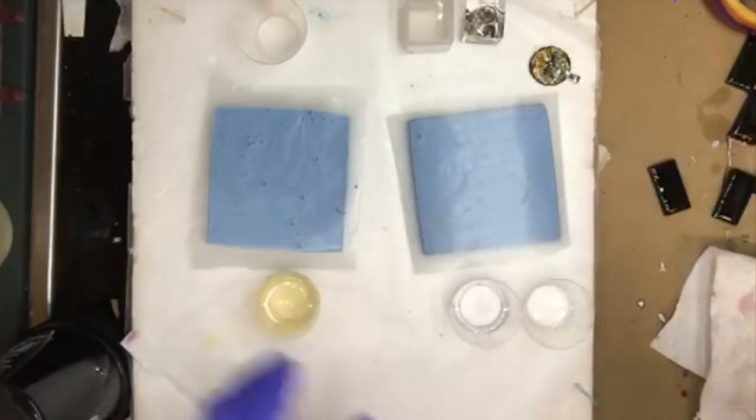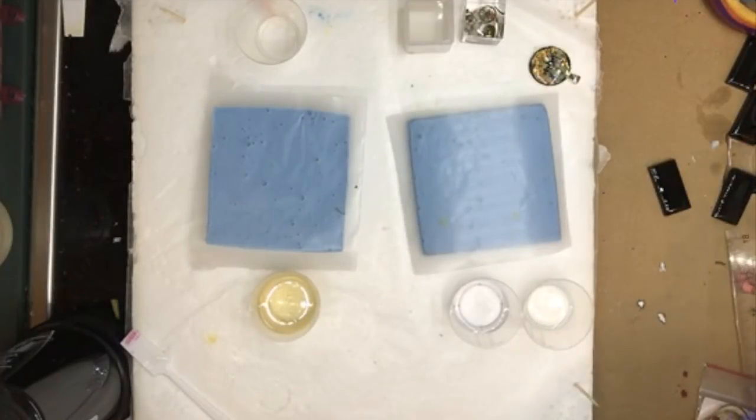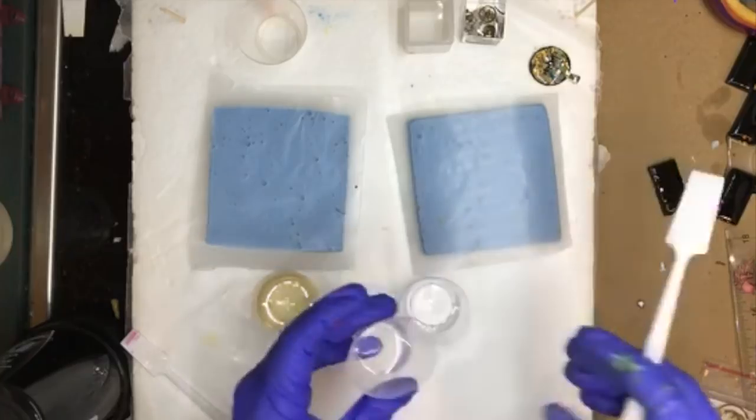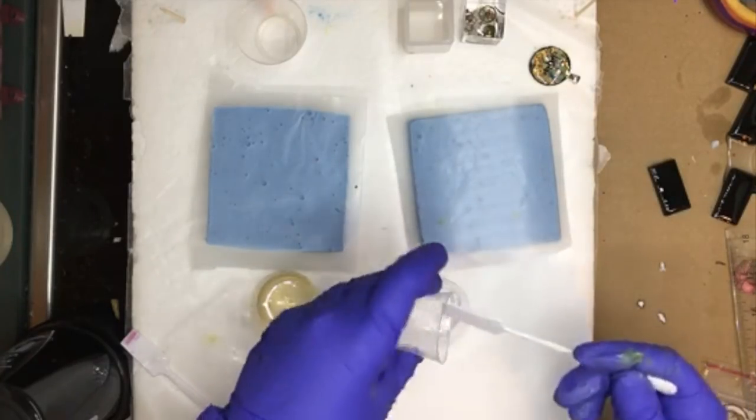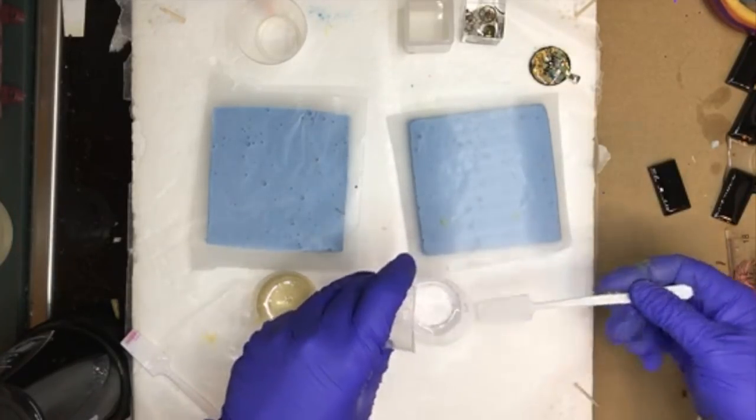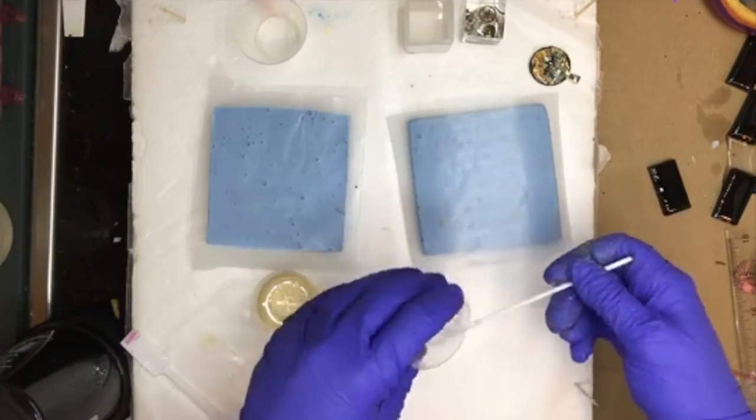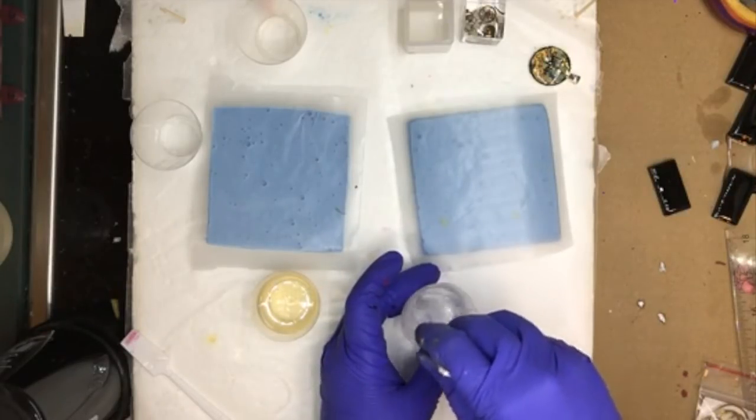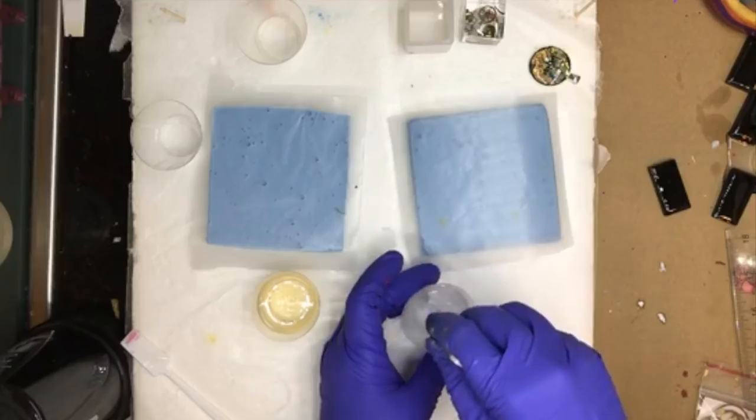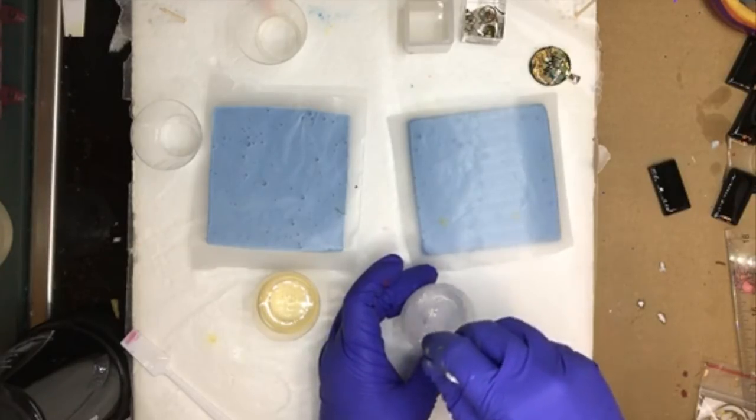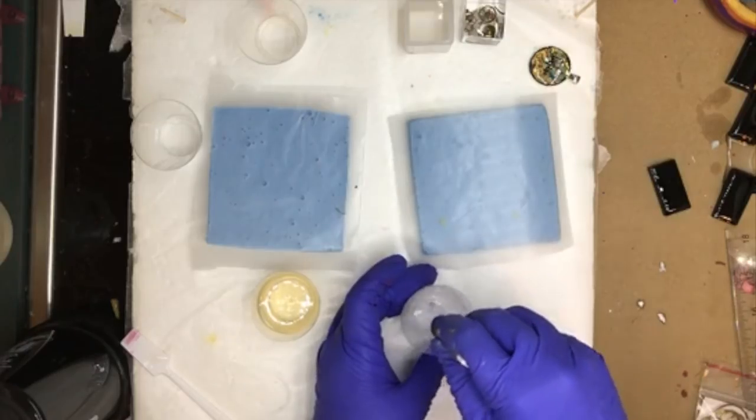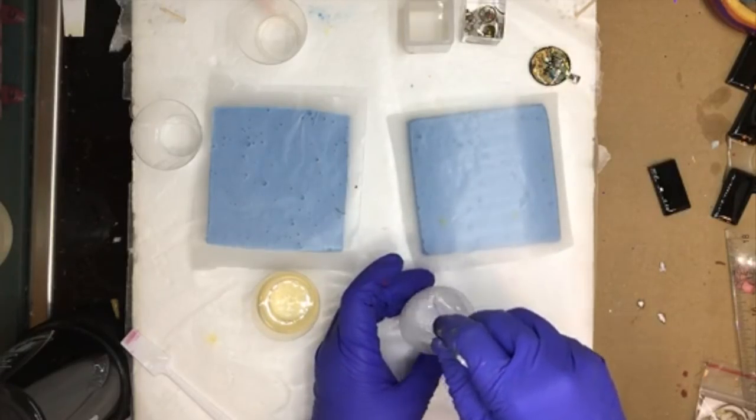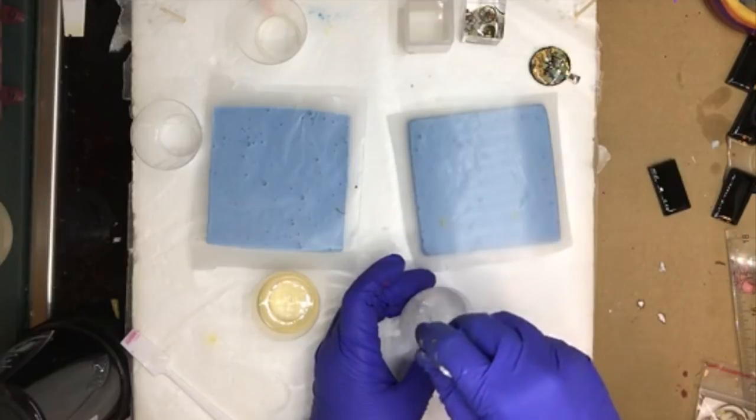All right. So now let's mix the Super Clear Resin. This is a casting resin. Right away, you should be able to see that it's a lot more liquid when you start mixing the two parts together.